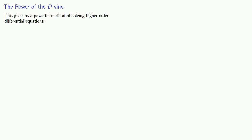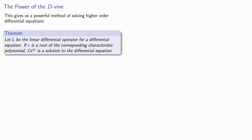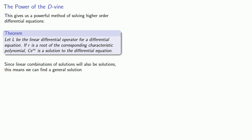This gives us an amazingly powerful method of solving higher order differential equations. Let L be the linear differential operator for a differential equation. If R is a root of the corresponding characteristic polynomial, then Ce to the power RX is a solution to the differential equation. And since linear combinations of solutions are also solutions, we can find a general solution as a linear combination of terms with factor e to the power RX.